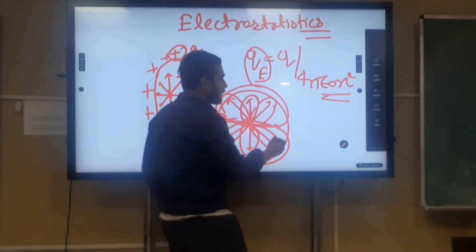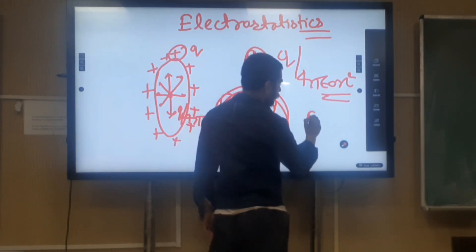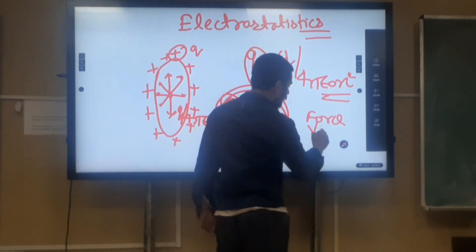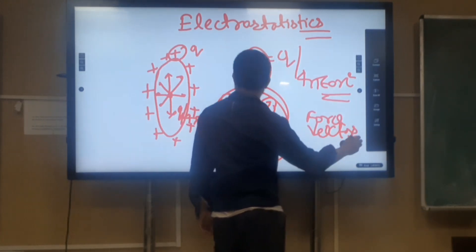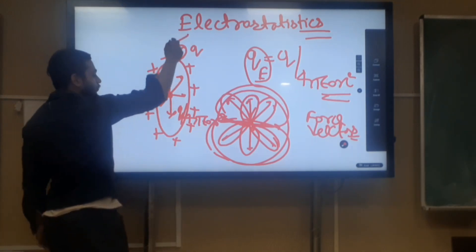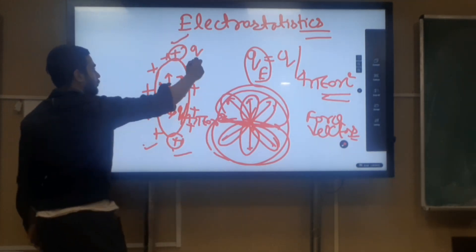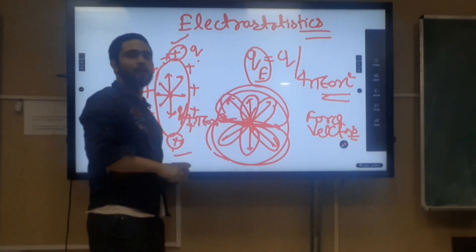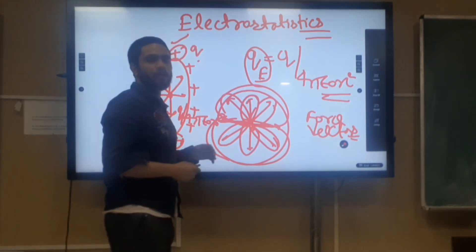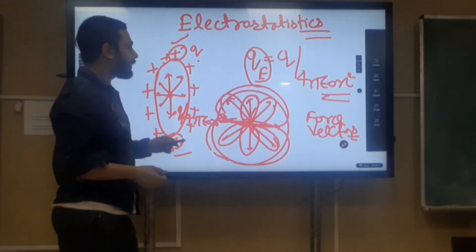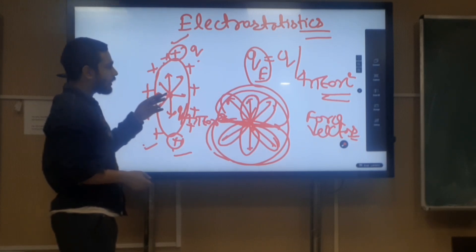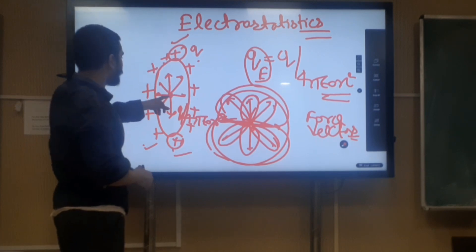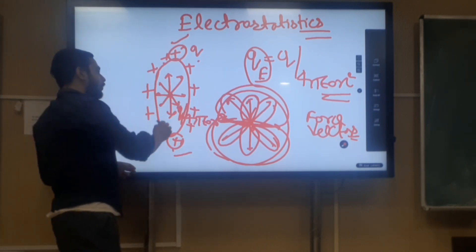The electric field is nothing but the electric force vector. All the force vectors cancel each other. Because of this charge, the electric field force is cancelled by the opposite vector. All the electric field vectors across the whole ring are cancelled by the other electric field force vectors present. So the electric field at the center is equal to 0. Because of the fully positively charged ring, the electric field at the center of this ring equals zero.